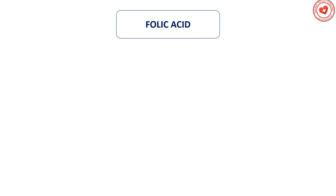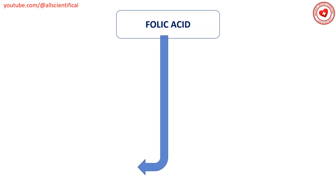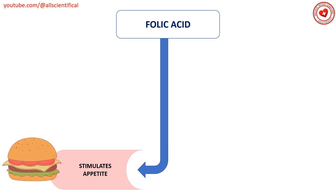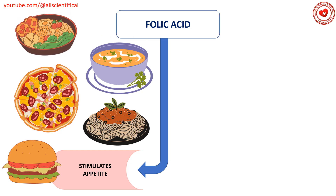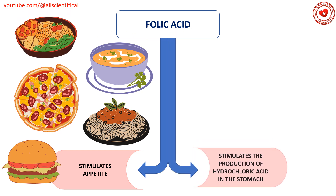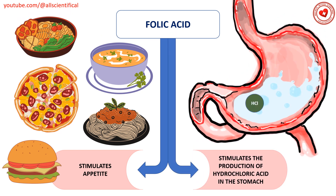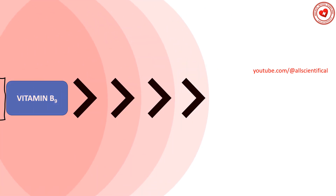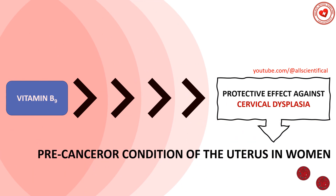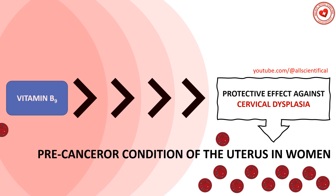Folic acid stimulates appetite and the production of hydrochloric acid in the stomach. Vitamin B9 has a protective effect against cervical dysplasia, a precancerous condition of the uterus in women.